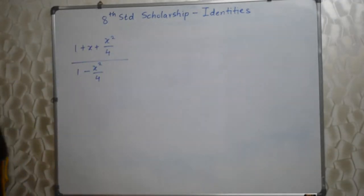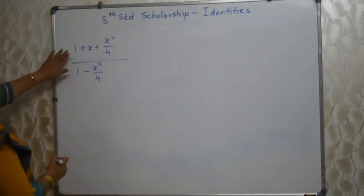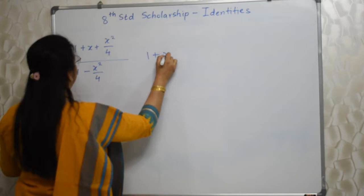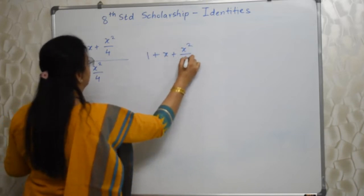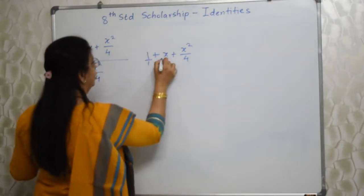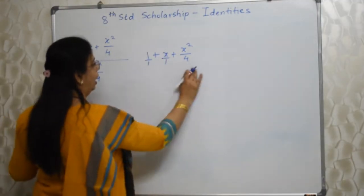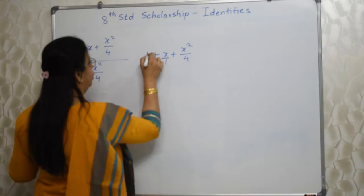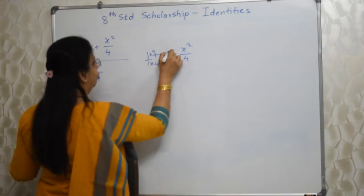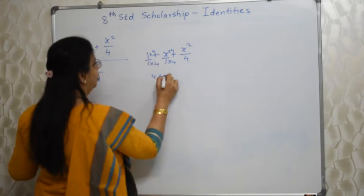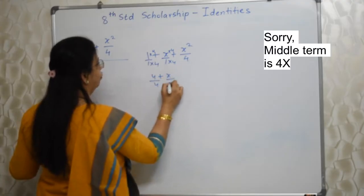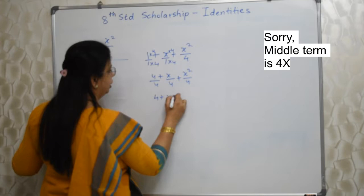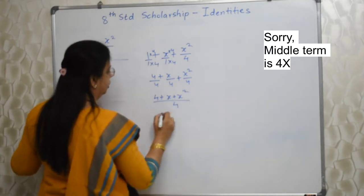The first sum I have written here — we need to simplify this. First we will concentrate on the numerator. This is upon 1, so we cannot add anything unless we make the denominator equal to 4. Multiplying through by 4, our new numerator becomes 4 plus x plus x² upon 4. This is our numerator.